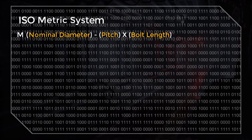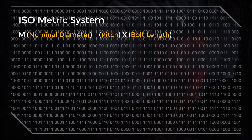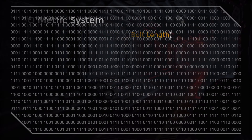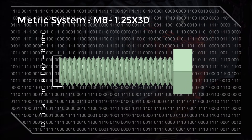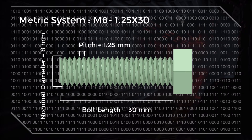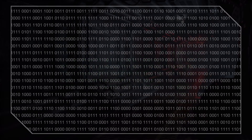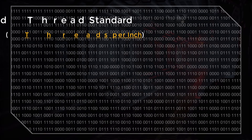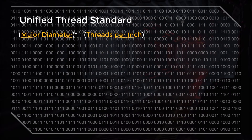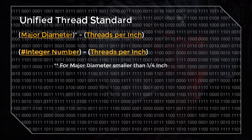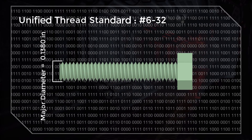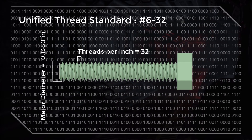In the ISO metric system, the representation starts with the letter M, followed by the nominal diameter of the bolt, the pitch distance, and the length of the bolt — all in millimeters. A typical example is a bolt with a nominal diameter of 8 mm, a pitch of 1.25 mm, and a length of 30 mm. In the Unified Thread Standard, the major diameter is represented in inches, followed by the number of threads per inch, which is the reciprocal of the pitch distance. For bolts with a major diameter less than a quarter inch, the diameter is indicated by an integer defined as a standard. A typical example is a 6-32 bolt, which has a major diameter of 0.13 inch and 32 threads per inch.